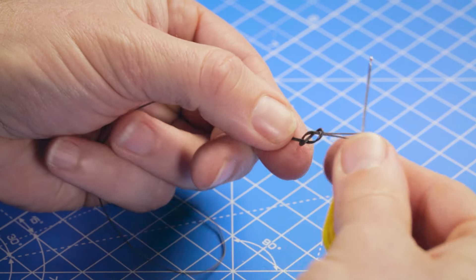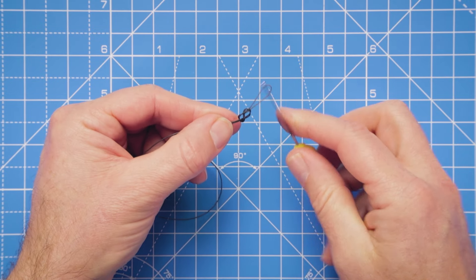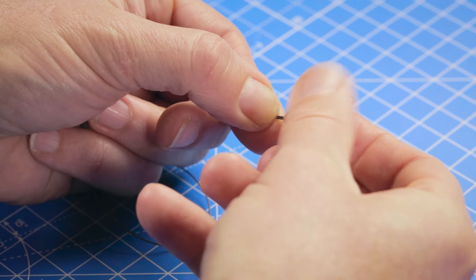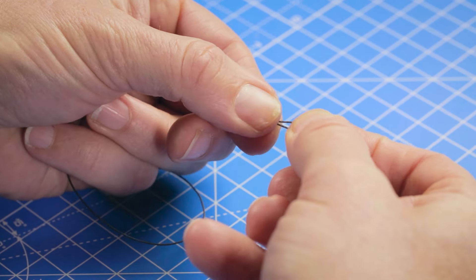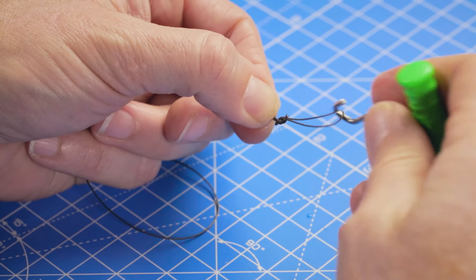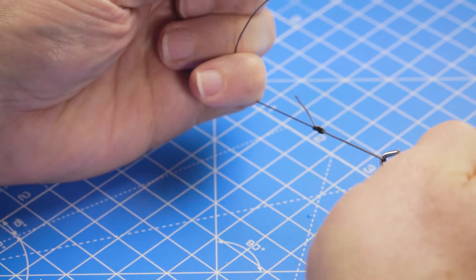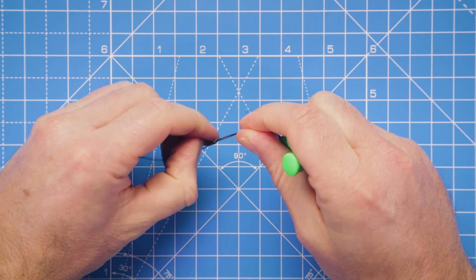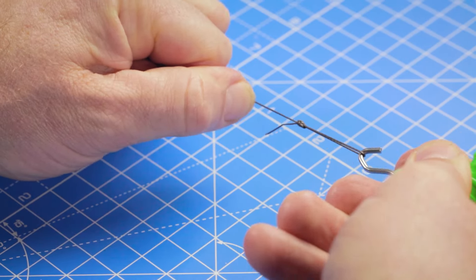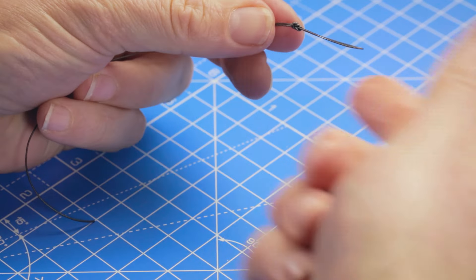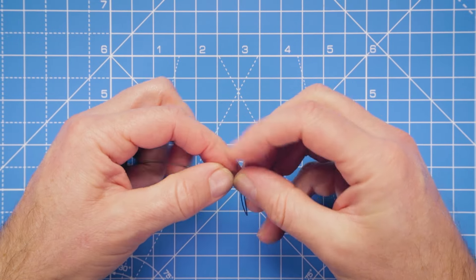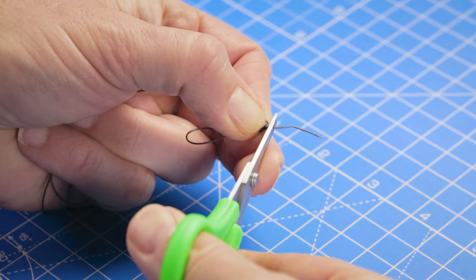And there we go, we've created a figure-of-eight loop knot there. Just going to moisten that with a little saliva before pulling it down. We just gently snug that down. But just to make sure it's really secure, we'll get the pullet tool. We can now give that a really good pull. It might seem a little bit fiddly, that knot, but it is super strong. There we go, that's tightened down nicely. And there we go, we've got a long loop at one end of that hook link. We can now just tidy it up by trimming off the tag end.